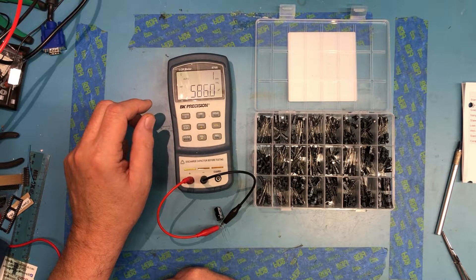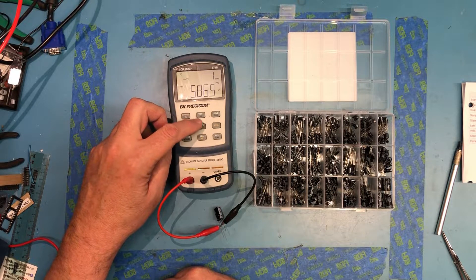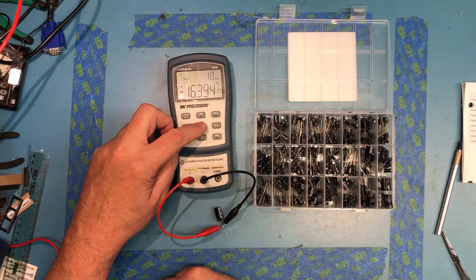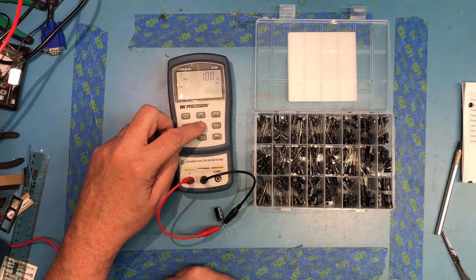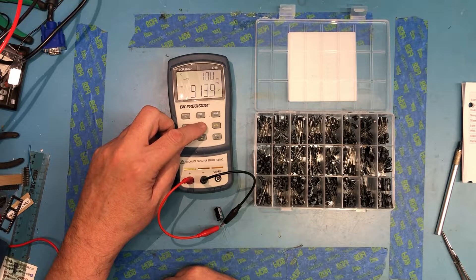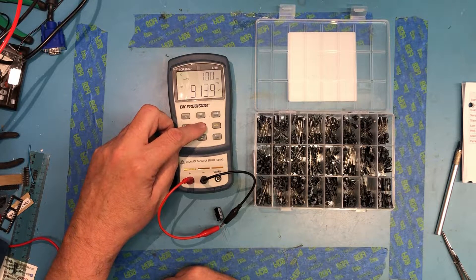So that's supposed to be 1,000 microfarad. It's measuring 586 at 1 kilohertz. I think that's the blown-up range. So at 100 hertz, 913 microfarad.